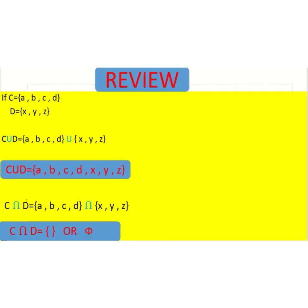Now we are going to find the intersection of set C and set D. Set C contains the elements A, B, C and D, whereas set D contains the elements X, Y and Z. None of the elements is common in set C and D. So C intersection D would be a null set or an empty set.